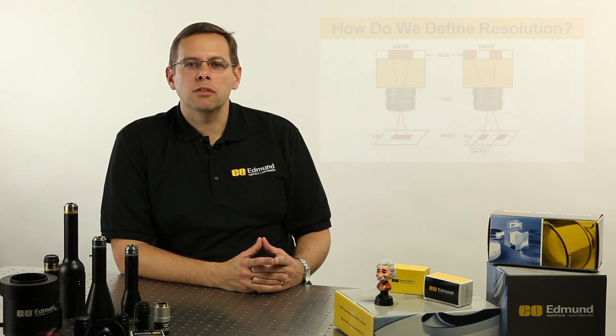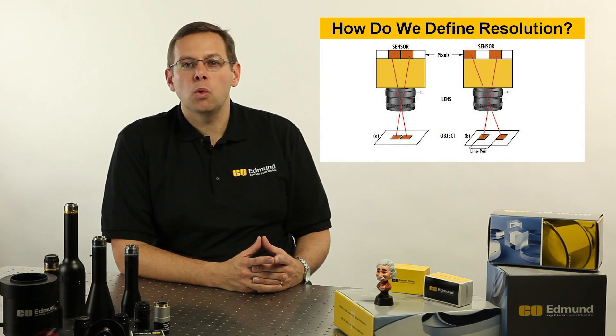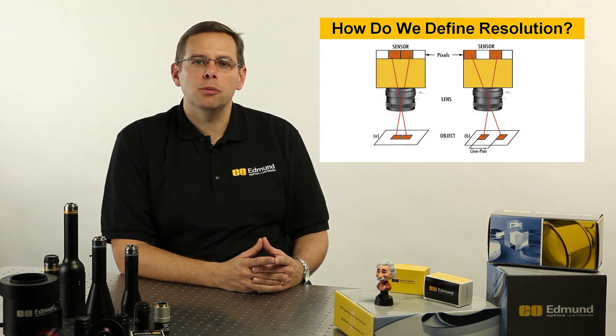Resolution is defined as the smallest object detail that can be seen by the imaging system. One of the things that actually controls that level of detail is the camera itself and the size of the pixel in the camera. It's really important to understand that is not the only limiting detail in the system. The optics themselves and the type of lighting being used all lead to different levels of resolution that can be obtained. They all have to be working together in concert to get the right level of resolution out of the system, or to maximize what your camera is able to obtain.